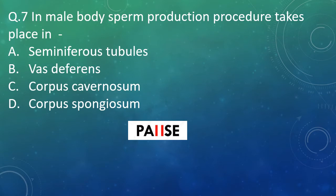Question 7: In the male body, sperm production takes place in which structure? Option A: seminiferous tubules. Option B: vas deferens. Option C: corpus cavernosum. Option D: corpus spongiosum. And the right answer is Option A — seminiferous tubules.